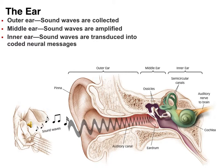The middle ear is where this information is kind of amplified. And this is not your ear canal where you get wax — that's still part of your outer ear. Your middle ear is on the other side of your eardrum. And then your inner ear is where those sound waves are being transduced into neural messages, just like we transduced light information into neural signals. That transduction is happening inside the inner ear.